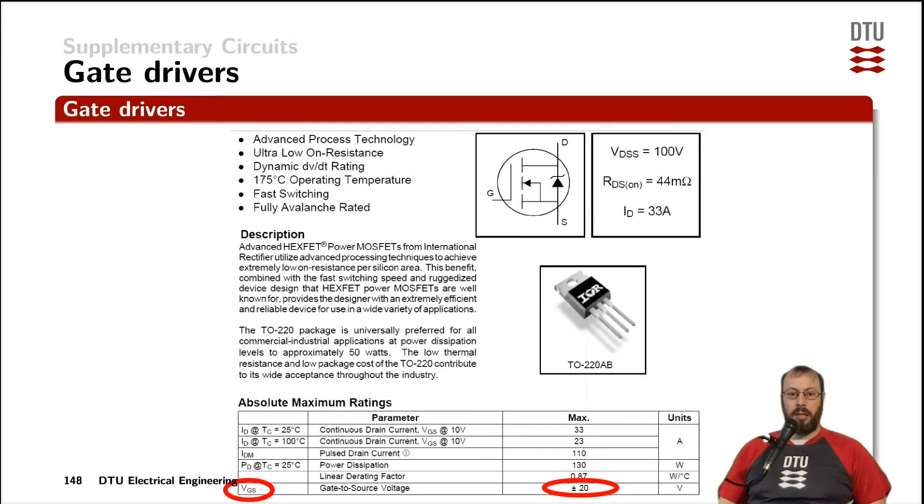For most applications in power electronics, the voltages that we want to switch in the power stage, like in this case maximum 100 volts for the MOSFET IRF540, are far beyond what the gate source voltage of those devices can tolerate.